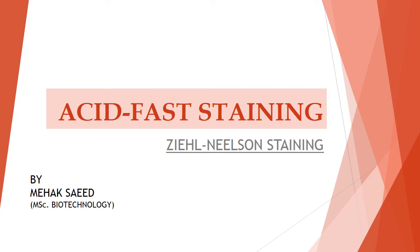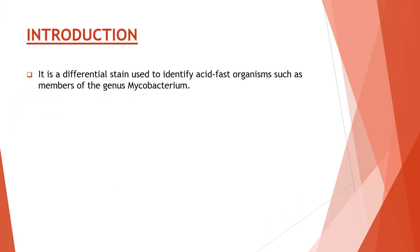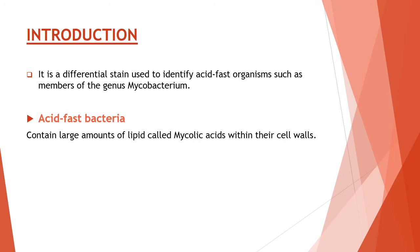Welcome to the channel. In this video, I will discuss acid-fast staining, also called Ziehl-Nielsen staining. It is a differential stain used to identify acid-fast organisms such as members of the genus Mycobacterium. Acid-fast bacteria contain large amounts of lipid substances within their cell wall called mycolic acids, making the cell wall resistant to most compounds. Acid-fastness is a physical property that gives a bacterium the ability to resist decolorization by acids during staining procedures.